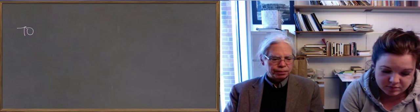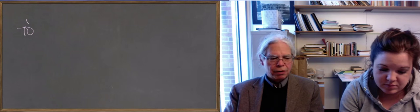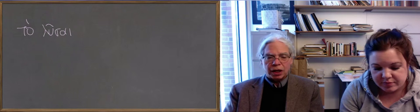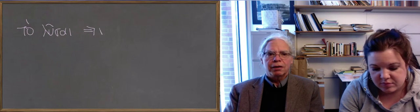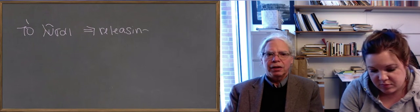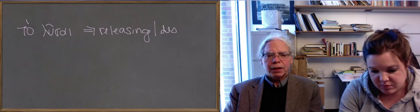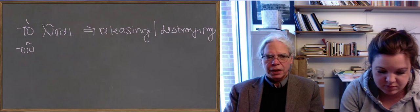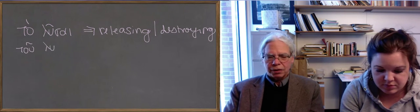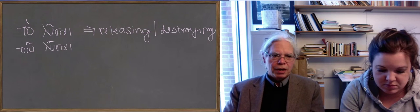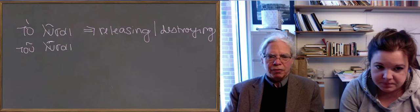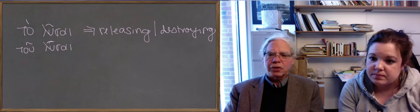If you take ta and you stick it in front of luain or luci, it means releasing or destroying as the noun. And you can inflect that, right? You can be in any case, any of the four cases and so forth, you can say to luci. If you have a preposition that means for the sake of, you can have it for the sake of releasing, and you put it in the genitive, for example.